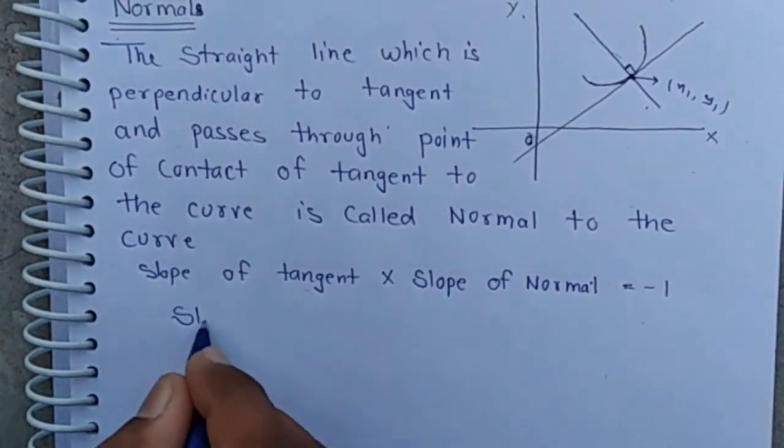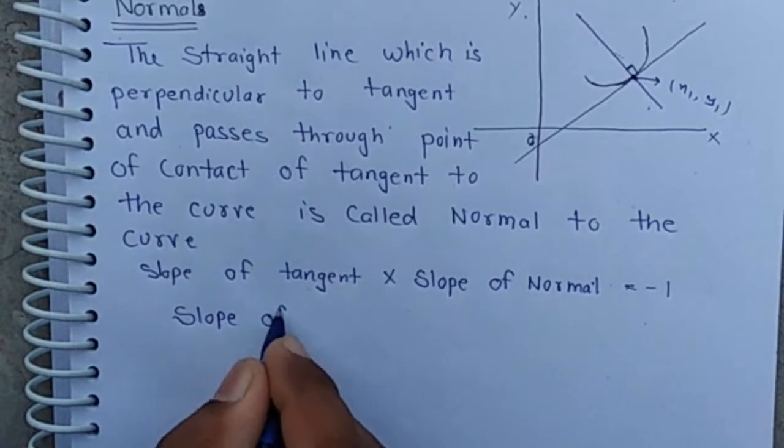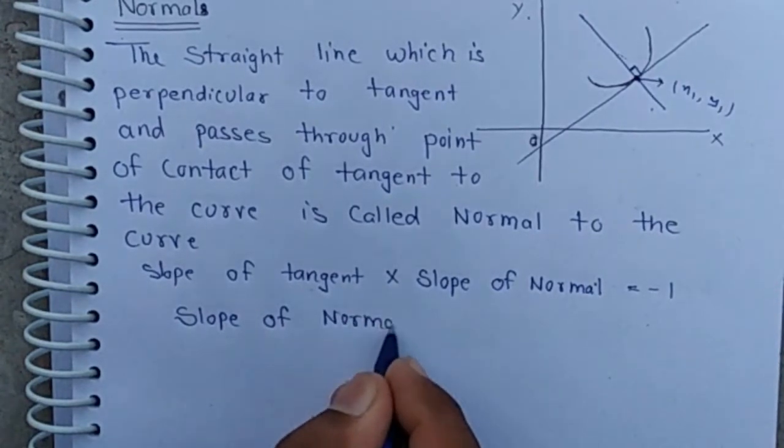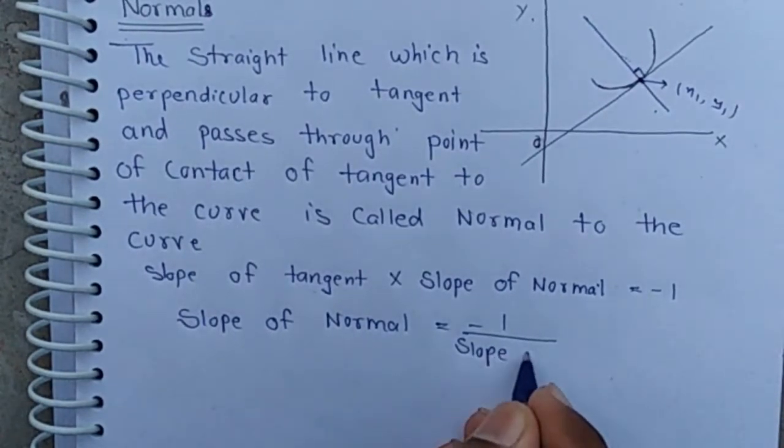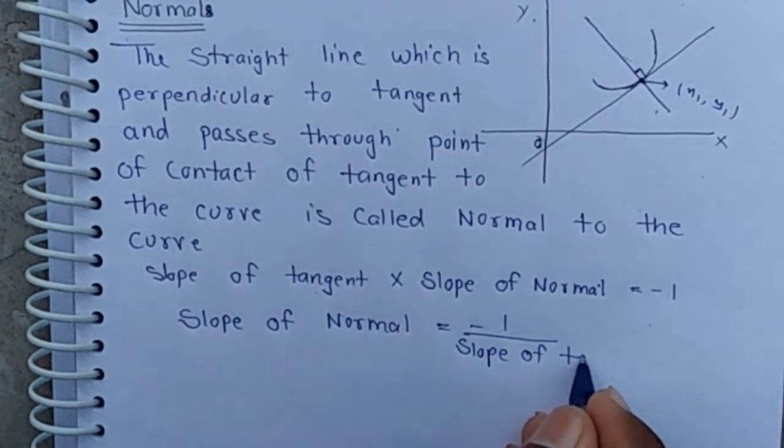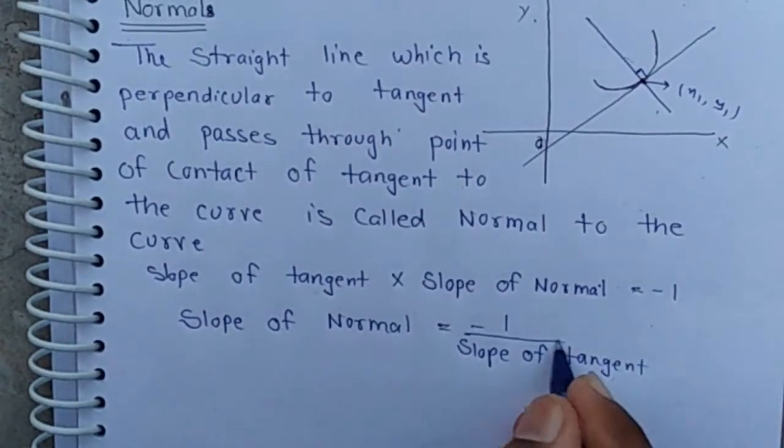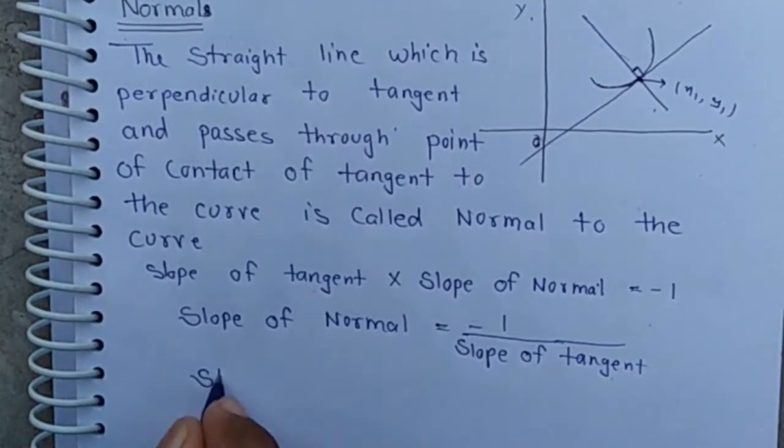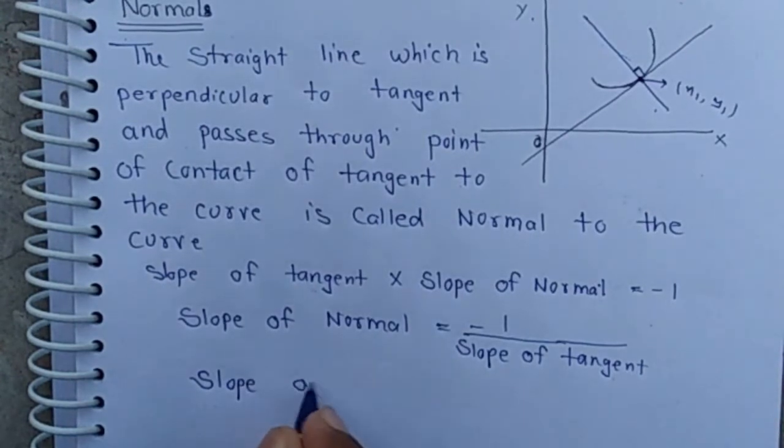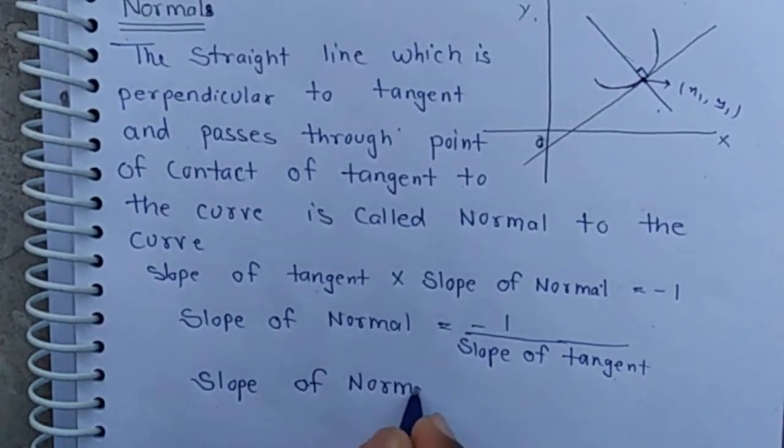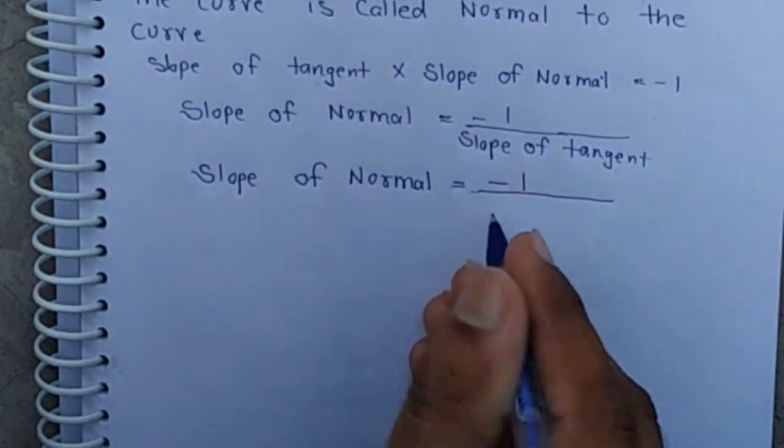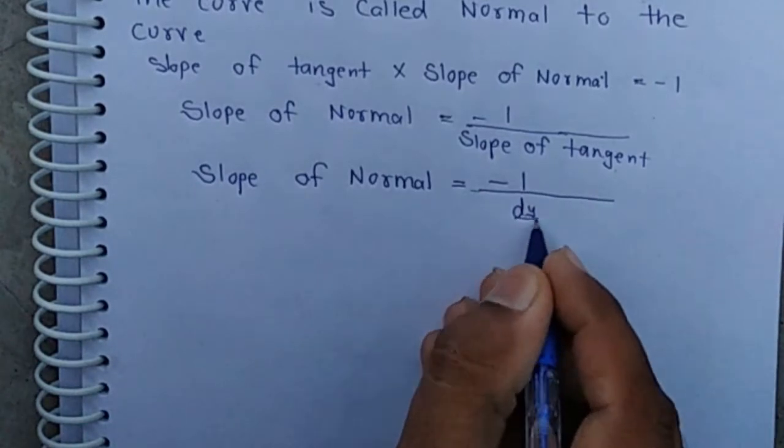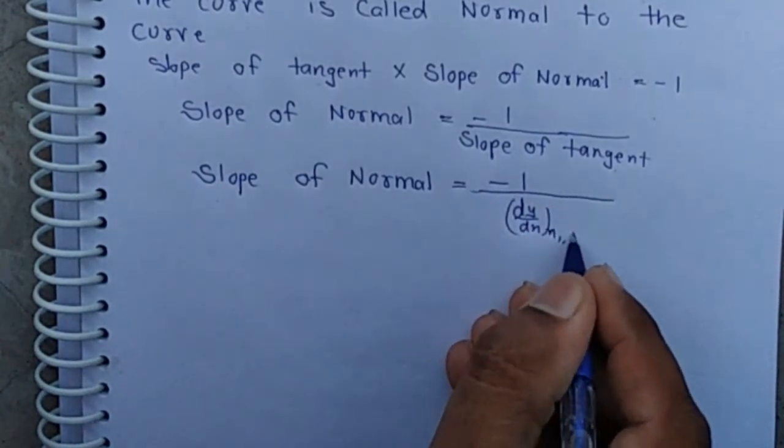Then slope of normal is equal minus 1 by slope of tangent. Then slope of normal is given by slope of normal is equal minus 1 by slope of tangent which is dy/dx at point x1 comma y1.